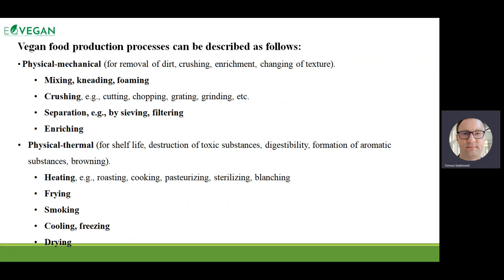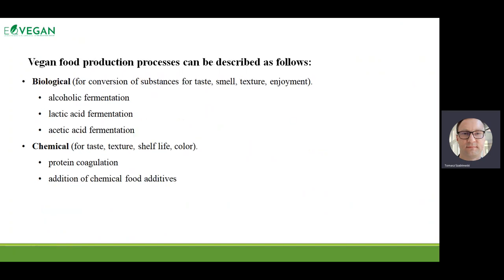The best way to prepare some egg alternative is just to prepare the premix — when we mix some ingredients from other companies, we prepare just a premix, and the consumer can add water and use it as typical products. We also use quite specific processes like biological and chemical processes to avoid hazards, because some plant ingredients can have some hazards. That's why we use fermentation to avoid anti-nutritional ingredients. Generally the typical equipment can be used to produce that kind of products.